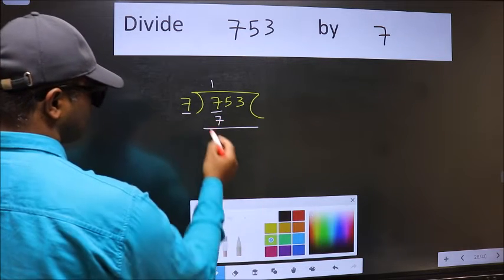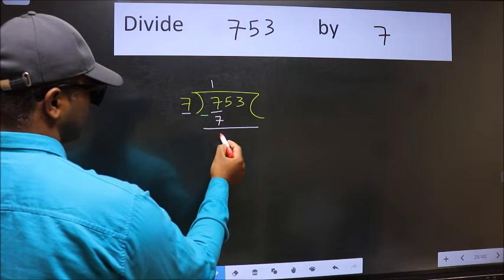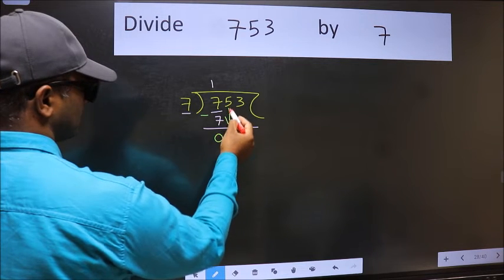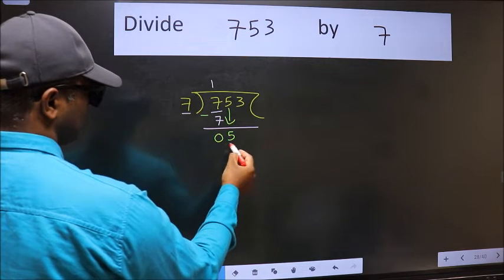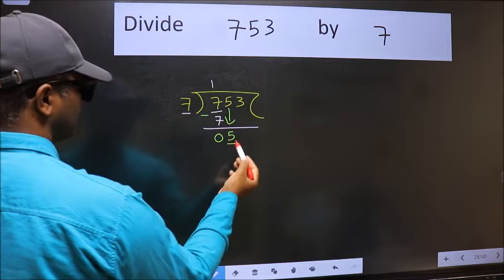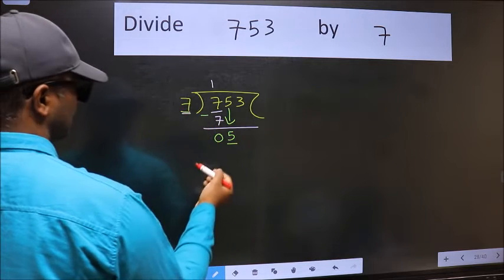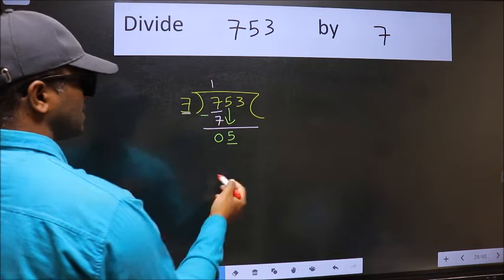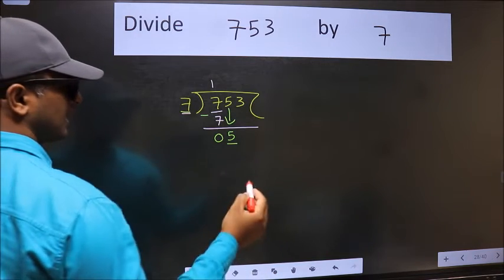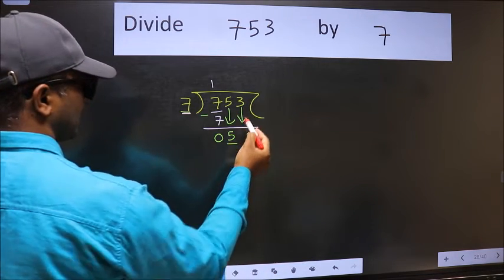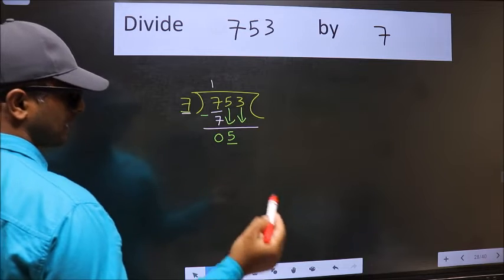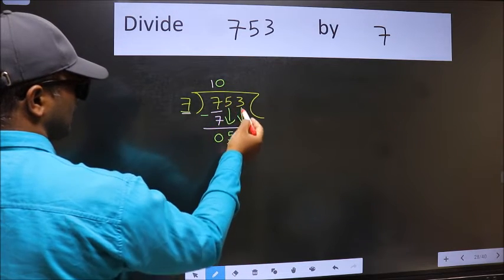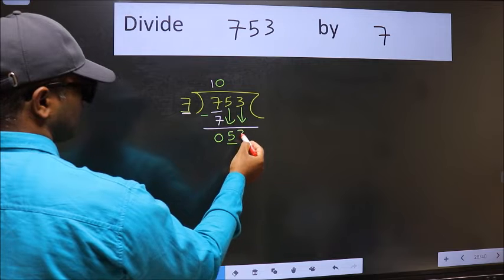Now we subtract and we get 0. After this, bring down the beside number, so 5 comes down. Now here we have 5 and 7. Since 5 is smaller than 7, we should bring down the second number. The rule is: we must put 0 here first, then only we can bring this number down.